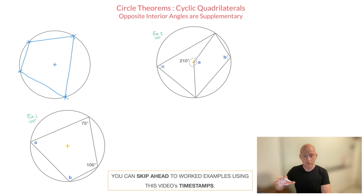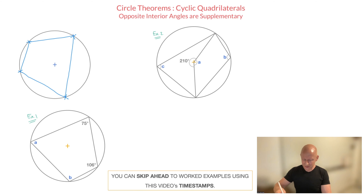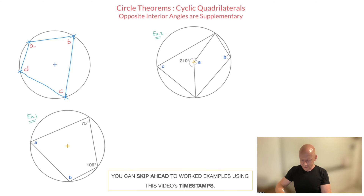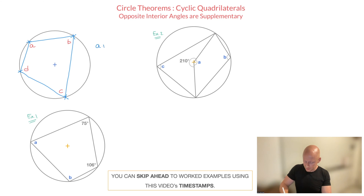Now the rule that I stated in the introduction was that opposite interior angles of a cyclic quadrilateral are supplementary, meaning they add up to 180 degrees. To illustrate that, let me give each of these four interior angles a name. I'll call this one A, the next one B, the next one C, and the next one D. Now that I've named each of the four angles, I can state that because this is a cyclic quadrilateral, we must have A plus C equals 180, as well as B plus D equals 180, since those are both pairs of opposite angles.